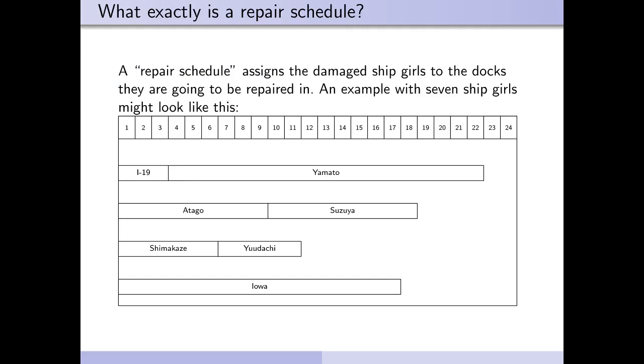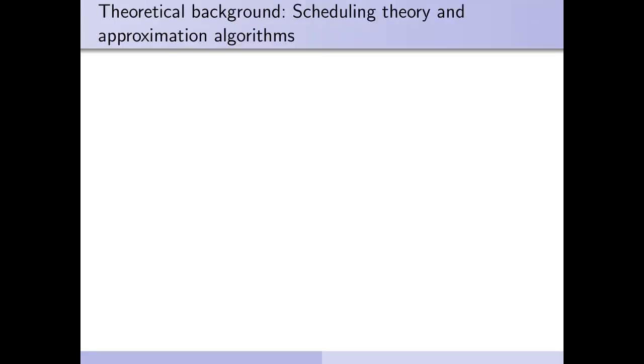Ok, before we dive deeper into this, I will first explain to you what exactly I mean when I say repair schedule. A repair schedule assigns the damaged shipgirls to their docks, for example by assigning a starting time and a dock to each repair so that the problem's requirements are fulfilled. I have supplied an illustration for a simplified example of such a schedule with 7 shipgirls that takes 22 hours in total. Ok, so now let's get back on track.